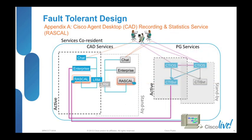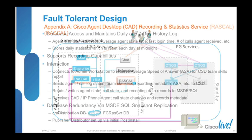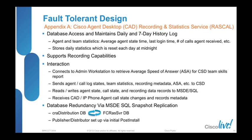Now let's look at the recording and statistics service, better known as RASCAL. One key thing about RASCAL is that it maintains and operates a local database on your CAD server, and also makes a connection out to your administrative workstation or AW/HDS. The CAD database contains two sets of information: a daily statistical snapshot and a seven-day historical snapshot of your agent and team statistics — for example, average agent state time, last login time, and number of calls received.